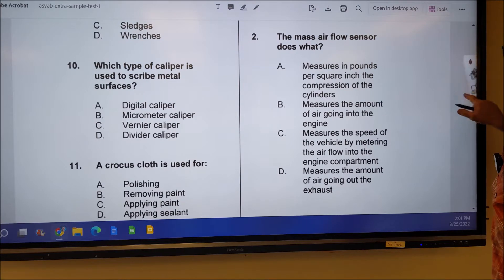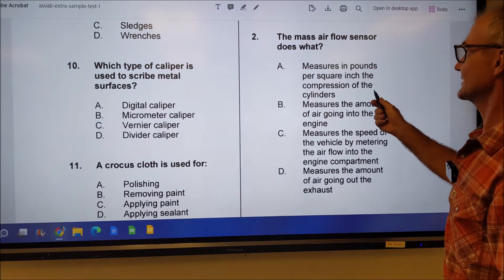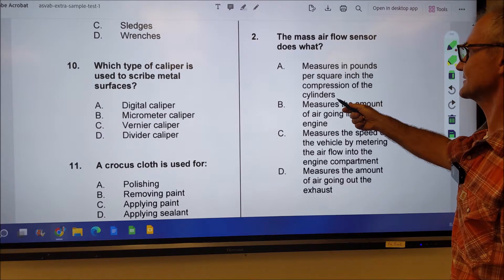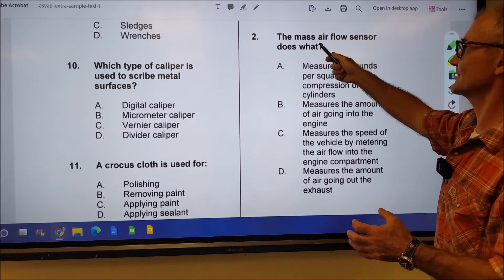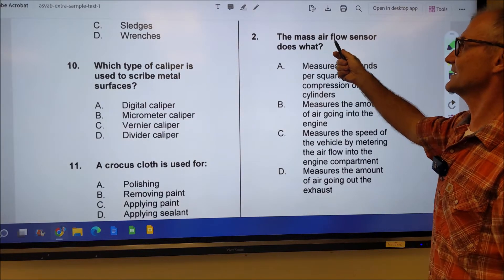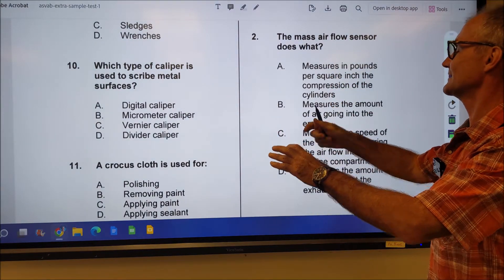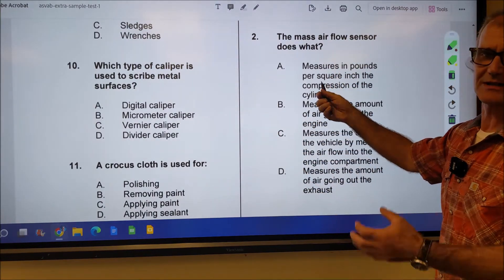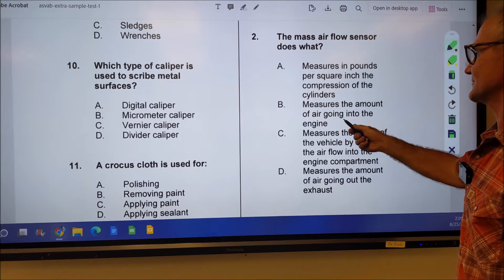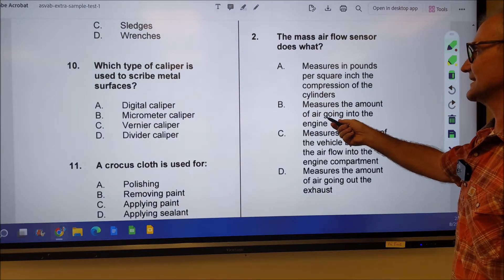The mass airflow sensor does what? It measures pounds per square inch of compression of the cylinders. Well, even if you don't know what a mass airflow sensor is, you can kind of figure it out. It's measuring the amount of air going by. This is not the amount of air going by, that's inside the cylinder. Measure the amount of air going into the engine. That has to be it.